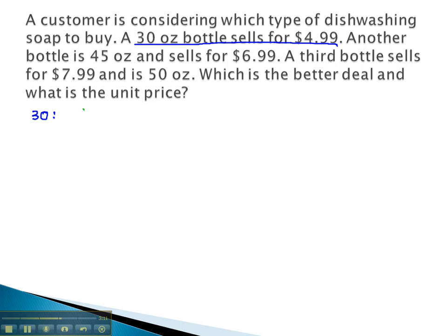We'll take the price, $4.99, and divide by the size of 30 ounces. 4.99 divided by the 30 ounces is 0.1663 dollars per ounce. We can change it to cents, moving the decimal twice: 16.63 cents per ounce.